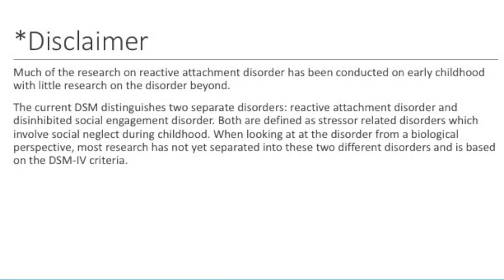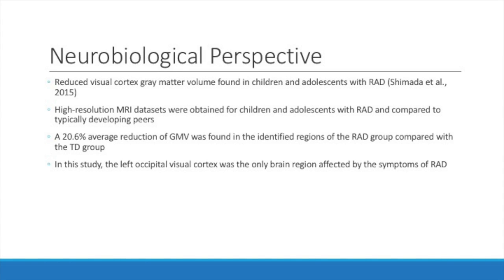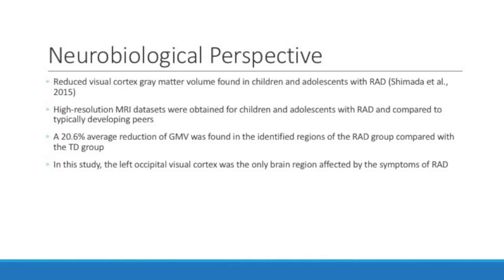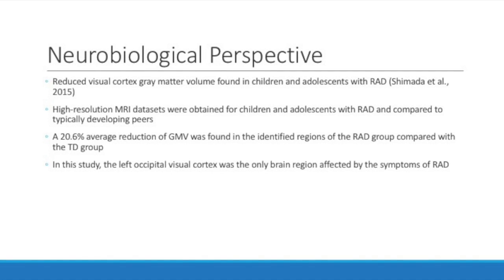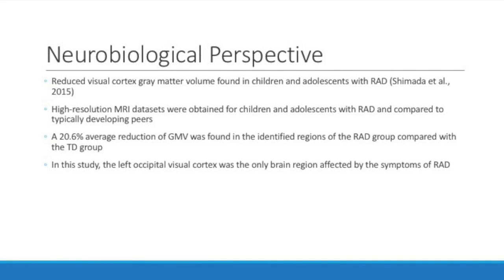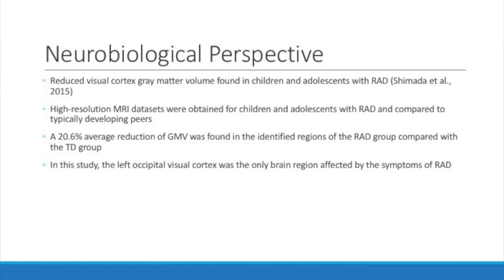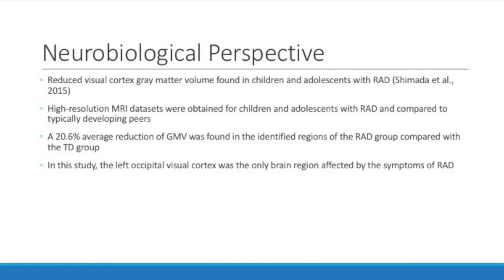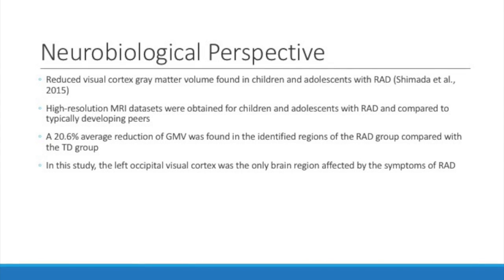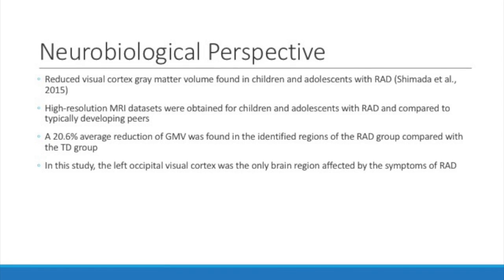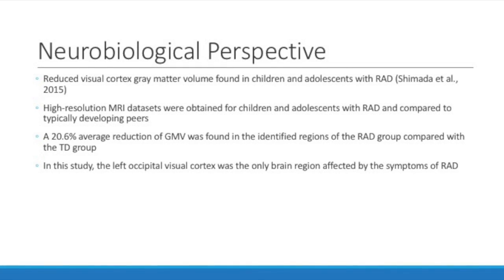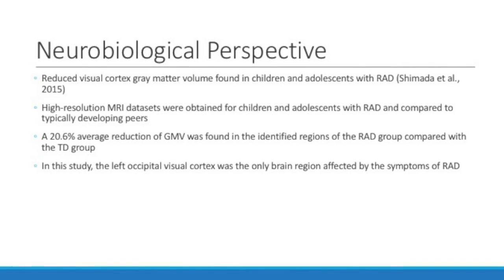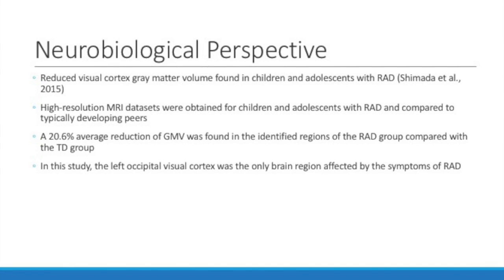There's not a lot of research on structural abnormalities in reactive attachment disorder. The article I found examined whether there's reduced visual cortex gray matter volume in children and adolescents. In this study, high-resolution MRI data were obtained for children and adolescents diagnosed with RAD compared to typically developing control subjects. There were 21 subjects diagnosed with RAD ranging in ages from 10 to 17 years old, with a mean age of 12.76 years, and 22 control subjects with a mean age of 12.95 years. All subjects were scanned with a 3-Tesla MR scanner. Whole brain structural images were analyzed controlling for age, gender, full-scale IQ, and total brain volume.